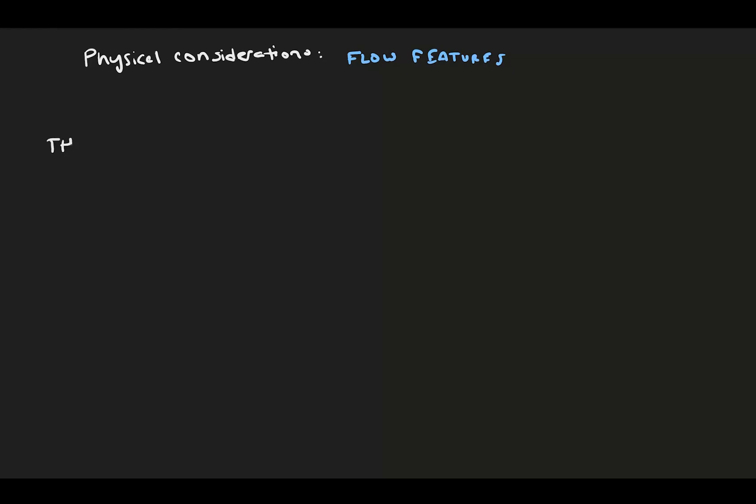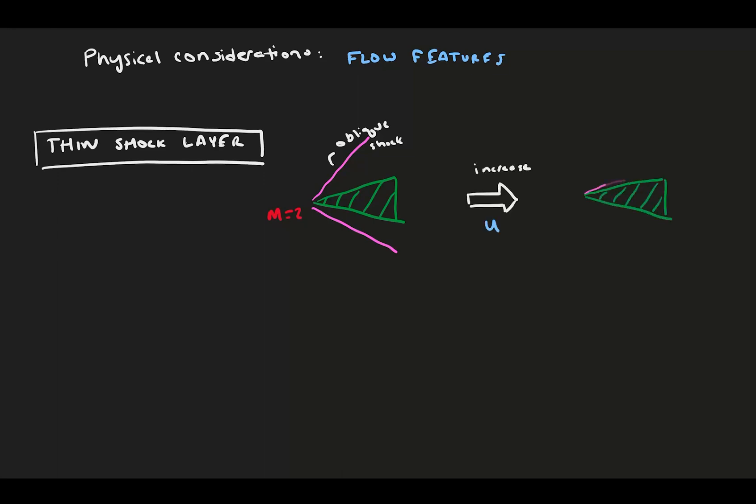First, at hypersonic speeds, we get very shallow shock angles that are referred to as thin shock layers. Consider a regular supersonic oblique shock at Mach 2 on a wedge. The shock angles are steep and far from the boundary. At faster velocities, though, the shock angle becomes shallower or closer to the wall. Why is this? And that's a fair question.